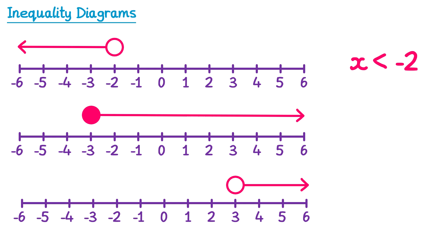For this next one we start with x. This time the numbers are to the right of the circle, so they are greater than, but I'll use greater than or equal to since the circle is shaded. Then we finish with the number that the circle is above — negative 3.